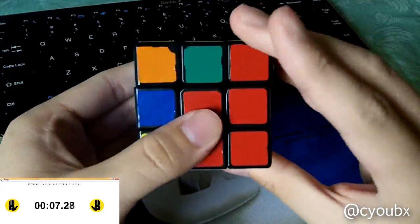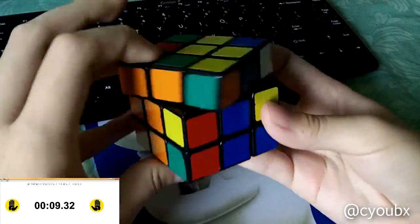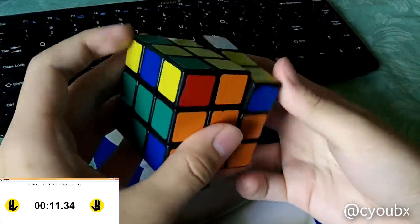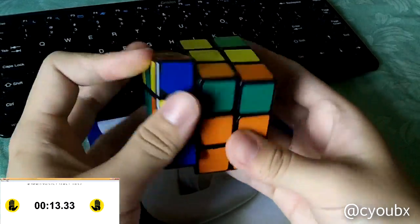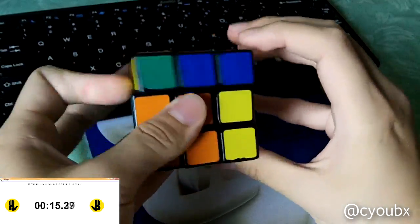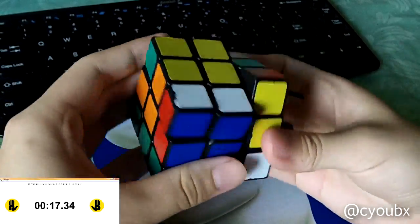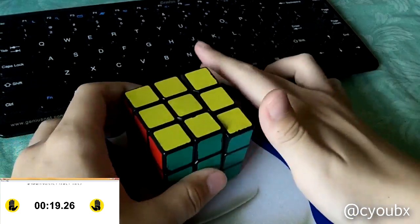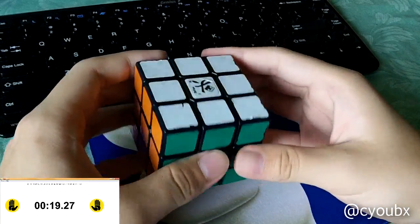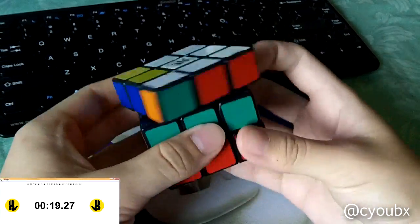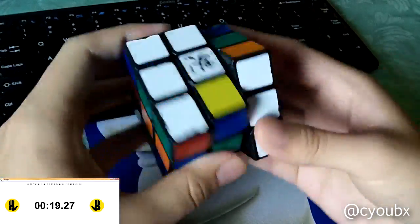To help you out a bit, here are some things to look out for. If you pause all during a solve, there are a couple possible problems. One possibility might be that you cannot recognize the case fast enough. You might be able to find the pieces, but you're pausing because you're struggling to figure out which case you have. Another possibility is that you're solving the current F2L pair too quickly.